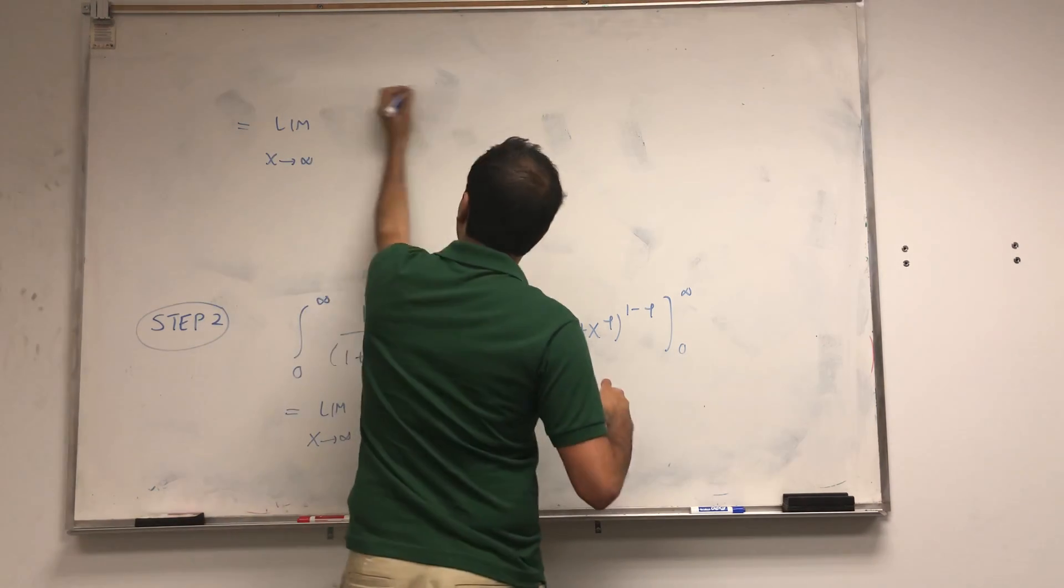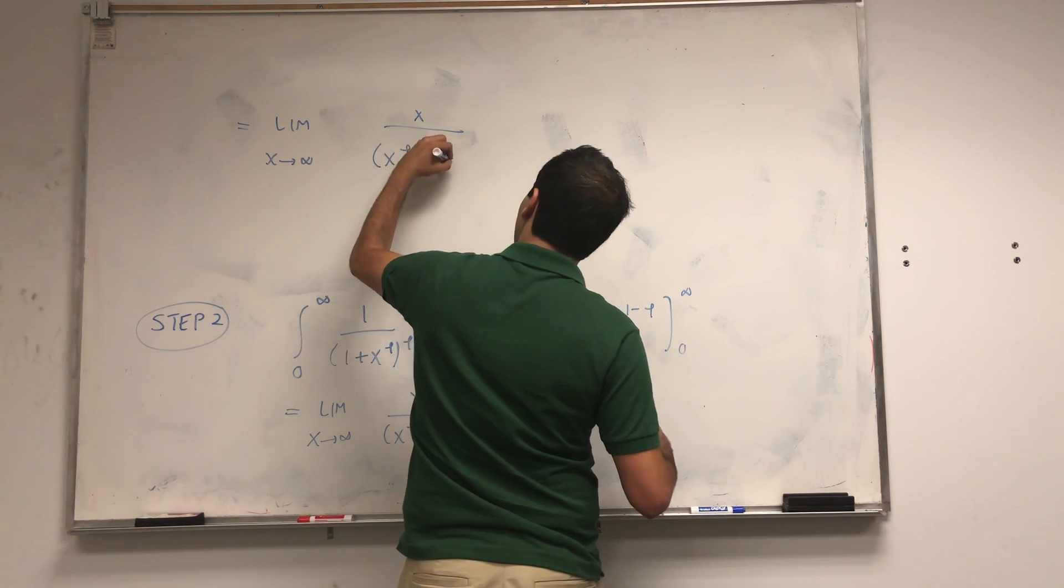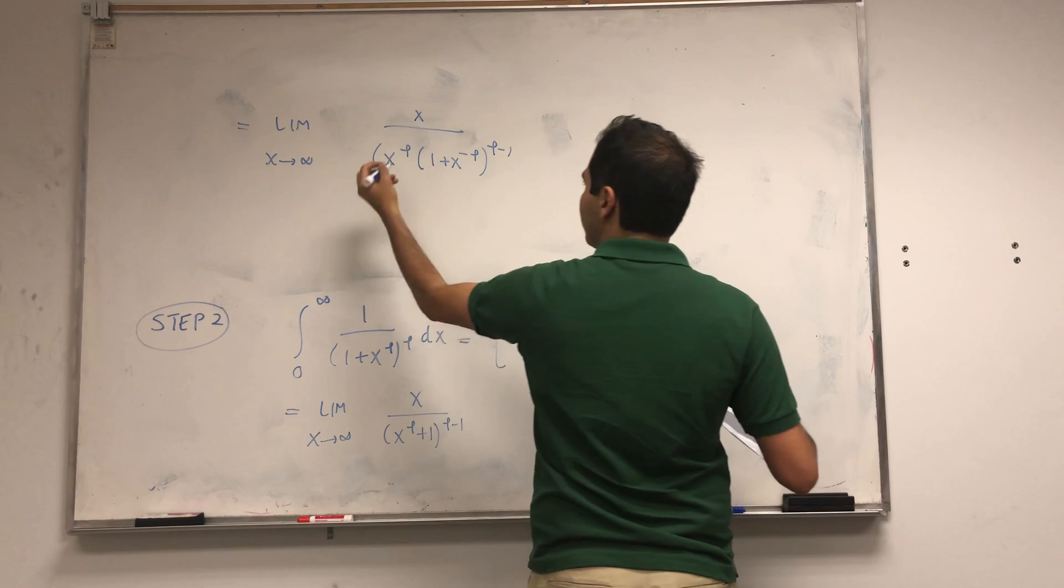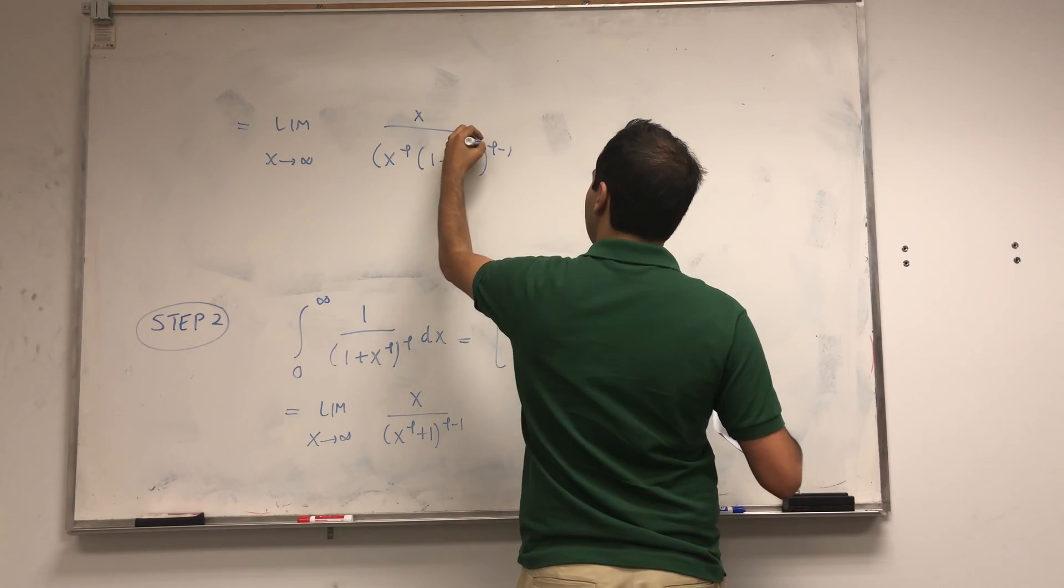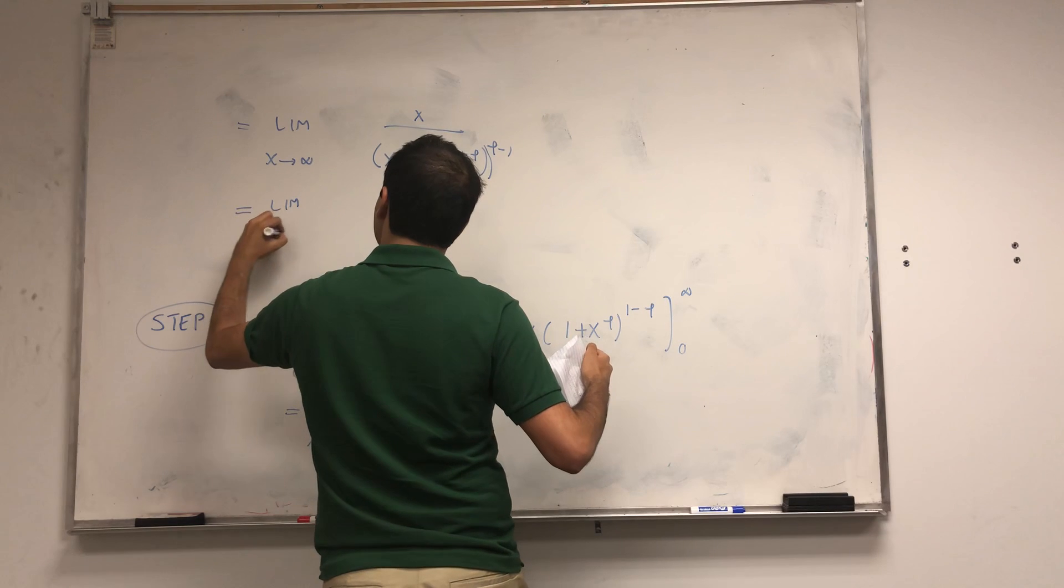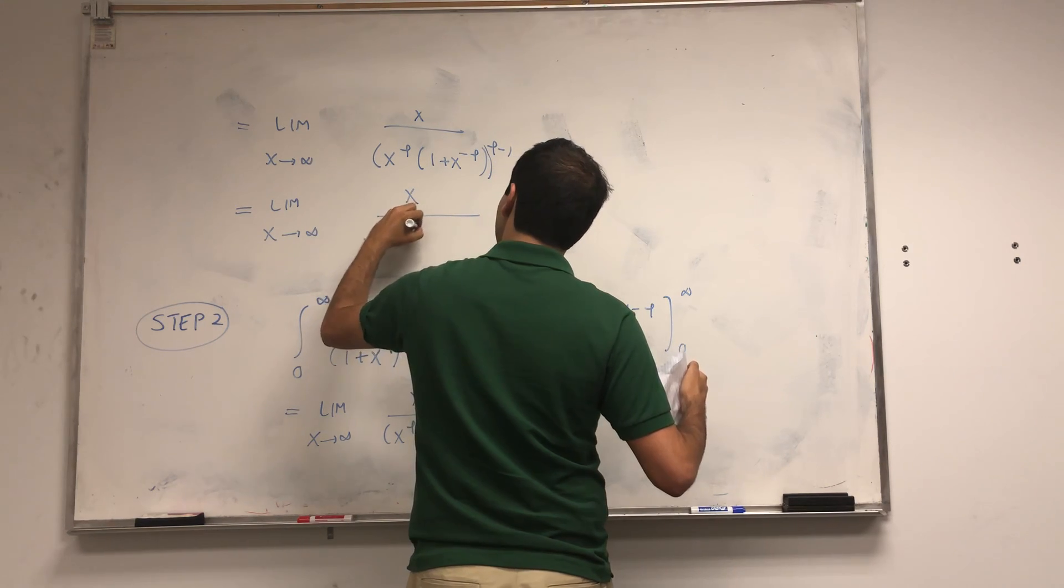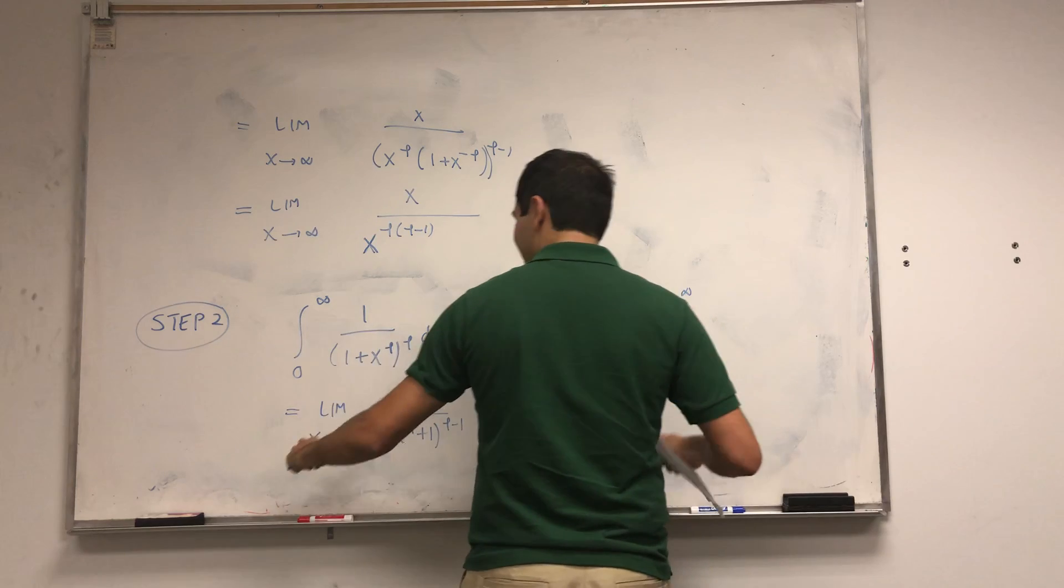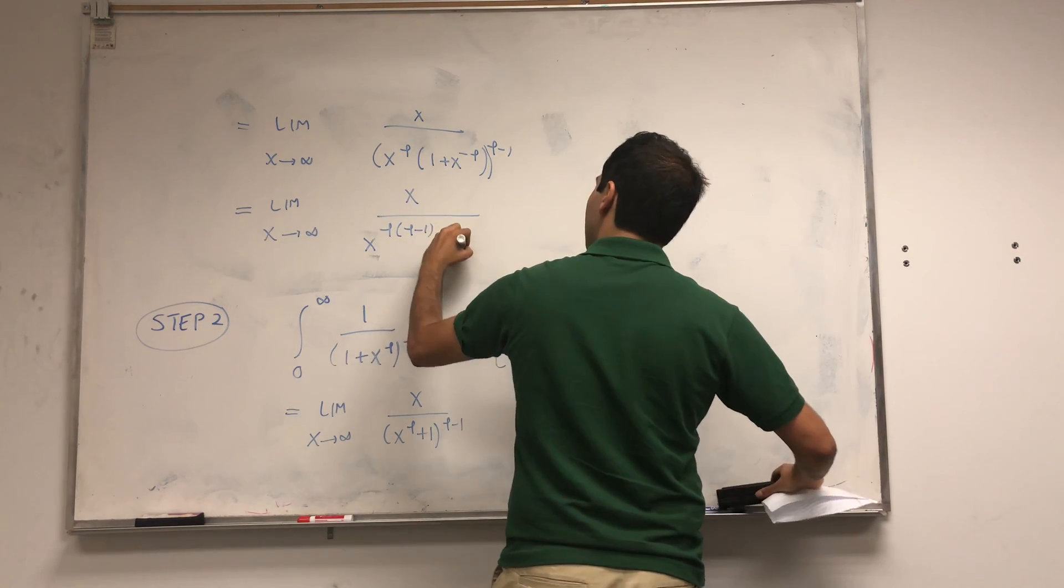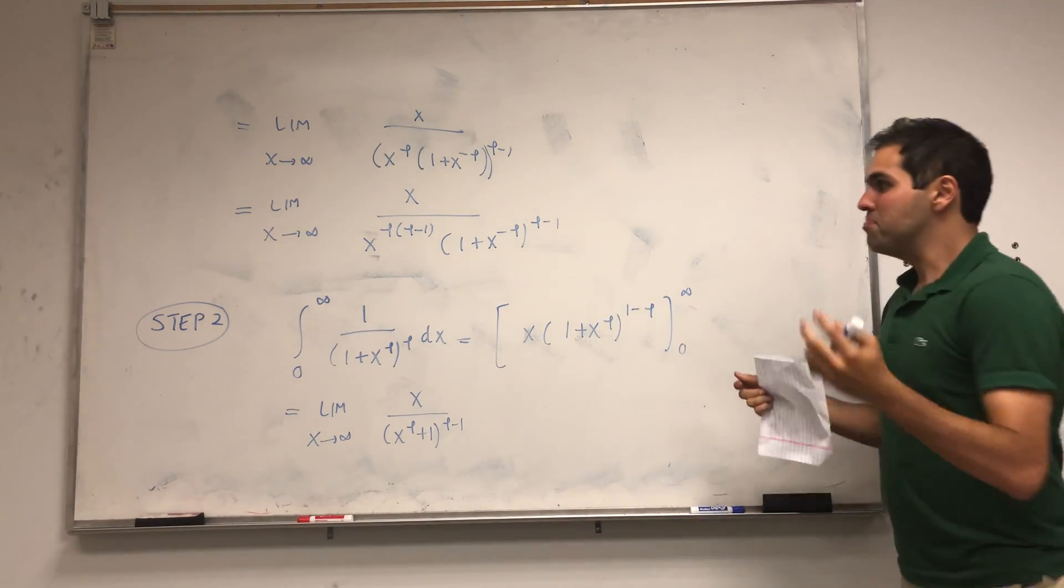So this becomes the limit as x goes to infinity of x times—now you factor out x^phi—so (1 + x^(-phi))^(phi-1). All right, and then that becomes the limit as x goes to infinity of x^(phi(phi-1)) times (1 + x^(-phi))^(phi-1). Okay, this looks like a disaster.